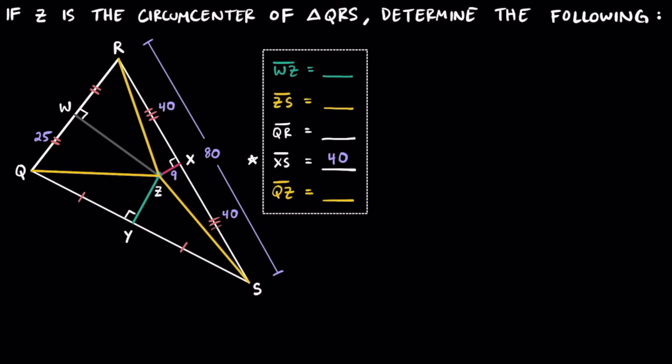Another easier one I think we can do next is figuring out the length of QR. Knowing that the length of QW is equal to 25, that must mean that the length of RW is also equal to 25. Adding those two together, we know the length of QR is going to be equal to 50. While figuring out those two pieces of information wasn't too bad, the next few are going to take a little bit more work.